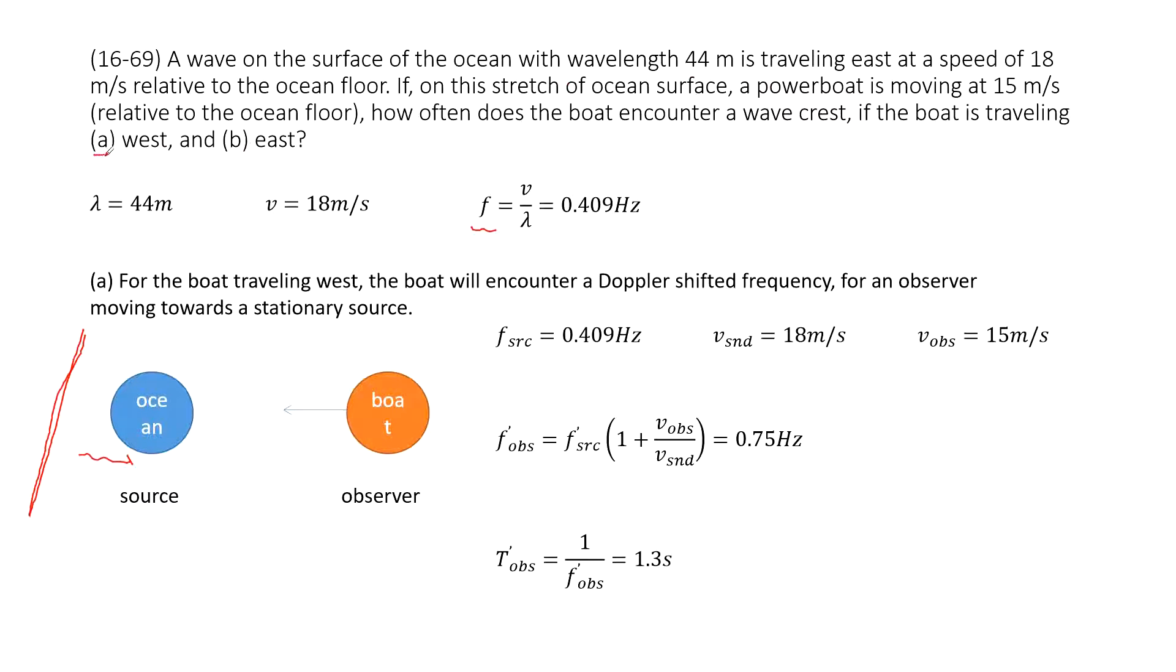So first case, we consider the boat travels to the west. When it travels to the west, this means the moving observer toward the stationary source. Agree? And then let's see what quantity is given.